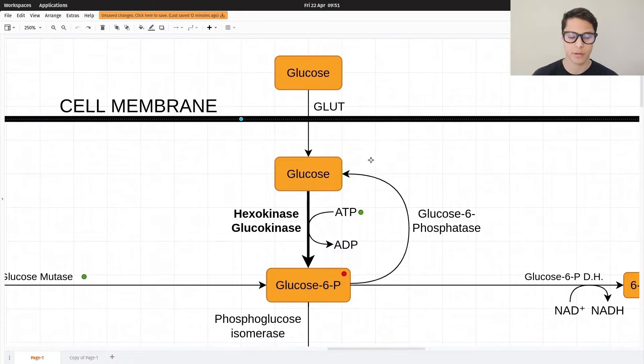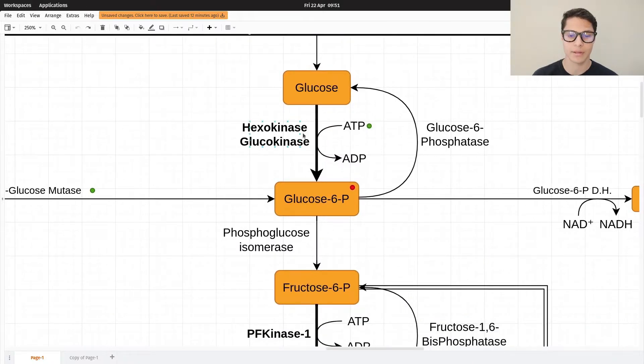Glucose gets inside the cell, then hexokinase acts on glucose to create glucose 6-phosphate. Hexo means 6.